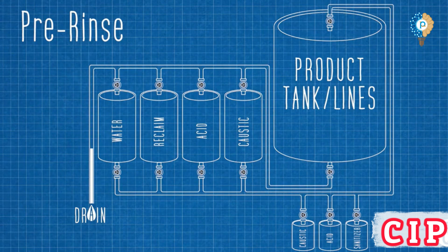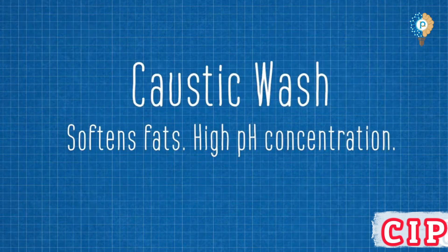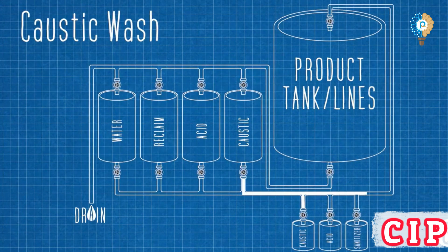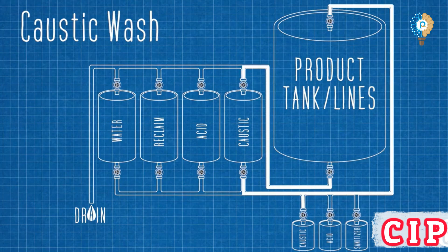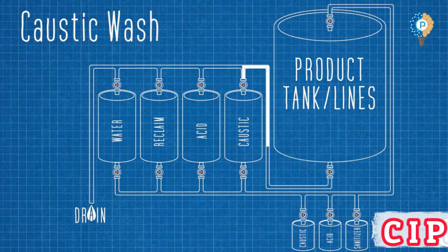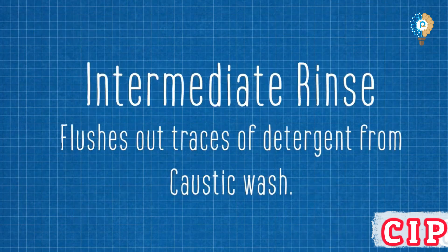Step 2: Detergent wash. Cleaning agents include alkaline and acidic solutions. Alkaline detergents remove fats, oils, and proteins. Acidic detergents remove mineral deposits and metals.